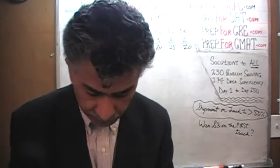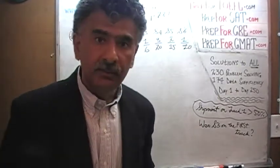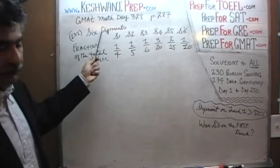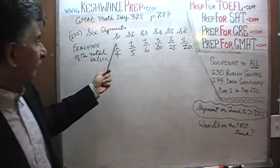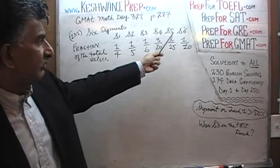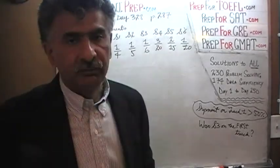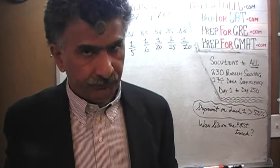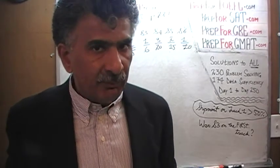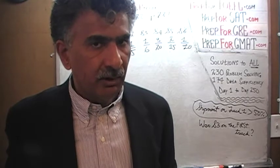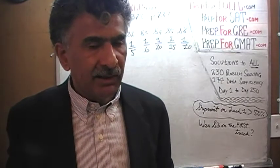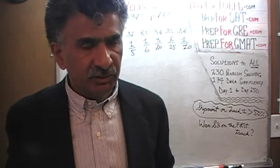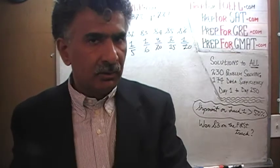The very first problem that you see on the page is number 131. In number 131, we are told that we have six shipments labeled S1, S2, S3, S4, S5, S6. We are also told that these six shipments are going on two trucks, and that a given shipment cannot be broken up — a given shipment has to go entirely on one truck or the other.